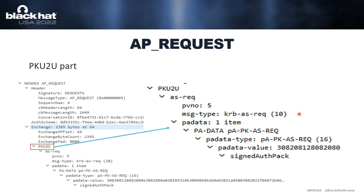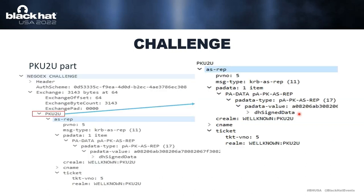In this case, the session key will be generated by Diffie-Hellman parameters — this is important to note for later attacks, because we cannot obtain the session key. The next message, the challenge message sent from server to client, contains a PKU2U part with a Kerberos PKInit AS Response. The server responds with a ticket containing a realm of 'WELLKNOWN:PKU2U', and the Diffie-Hellman parameters which the client extracts to generate the shared session key.